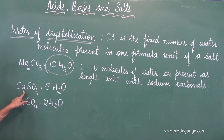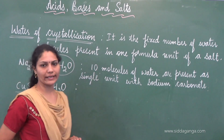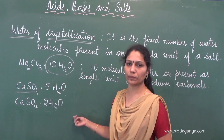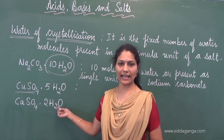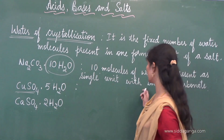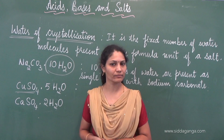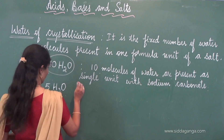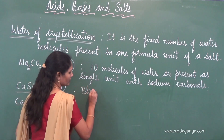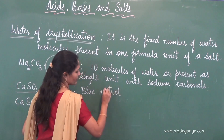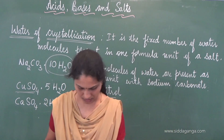Is this clear? Similarly, CaSO4·2H2O — 2 is di — dihydrated calcium sulfate. Two molecules of water are present as a single unit with calcium sulfate. CuSO4·5H2O is commonly called blue vitriol. We have got some interesting experiment related to this — a very simple experiment I will show you. You can follow the textbook with me.